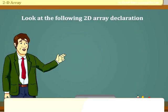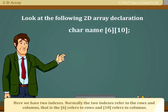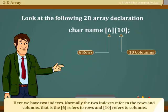Look at the following 2D array declaration. Car name [6][10]. Here, we have two indexes. Normally, the two indexes refer to the rows and columns. That is, the 6 refers to rows and 10 refers to columns.